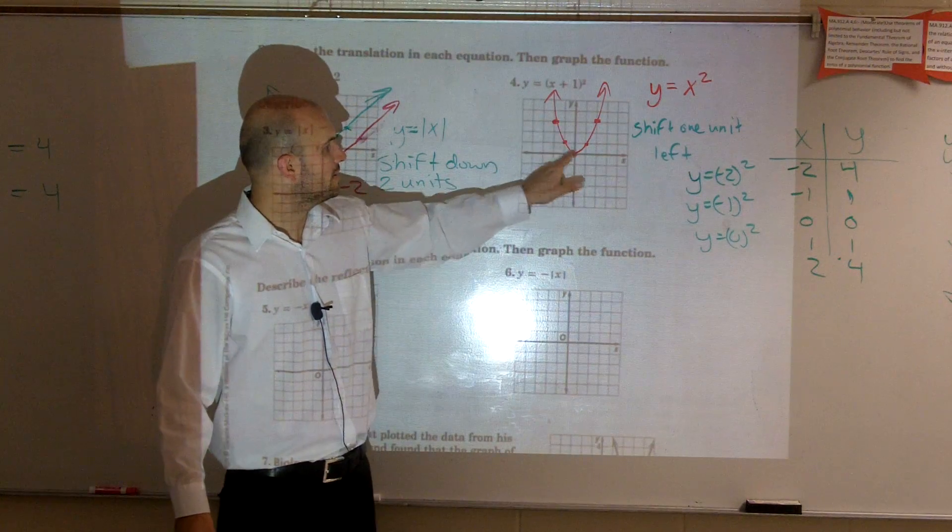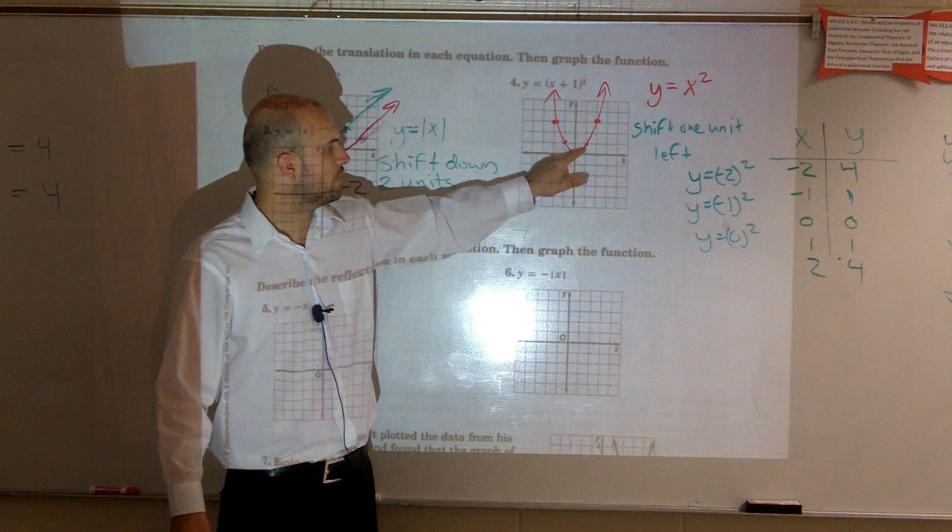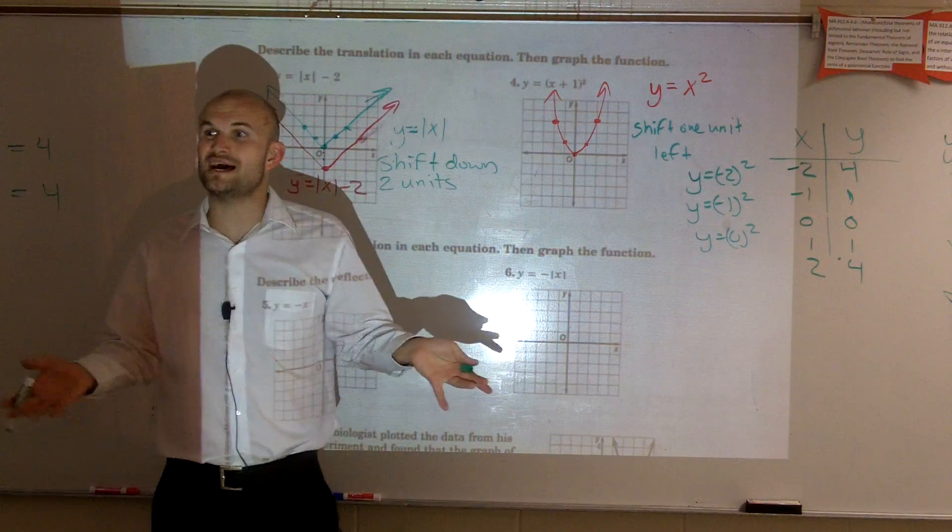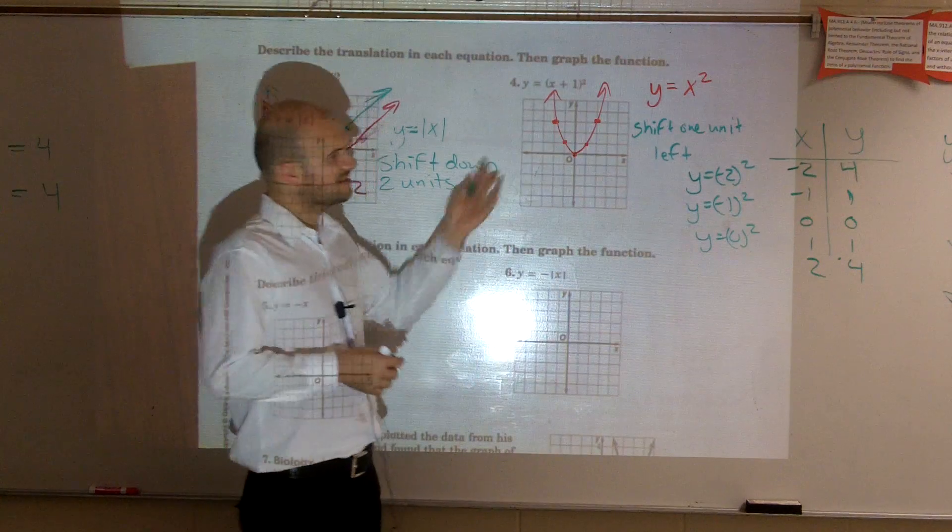Negative 2, 4. Negative 1, 1. 0, 0. 1, 1, 2, 4. It's kind of like the first time you guys learn how to graph lines. We plotted points and connected. Same thing with these.